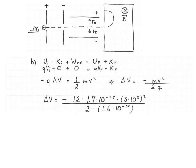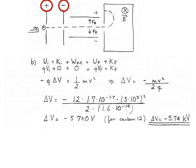For carbon-12, the mass is 12 times the atomic mass unit (1.7×10⁻²⁷ kg), multiplied by (3×10⁵ m/s)², divided by 2 times 1.6×10⁻¹⁹ C. The potential difference needed to accelerate carbon-12 to 3×10⁵ m/s is minus 5,740 volts, or −5.74 kilovolts.